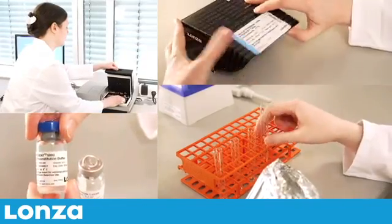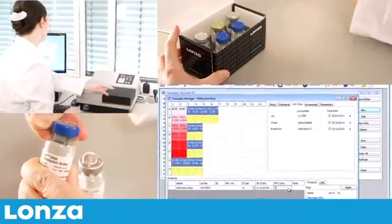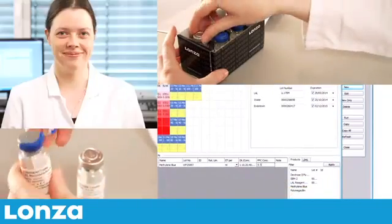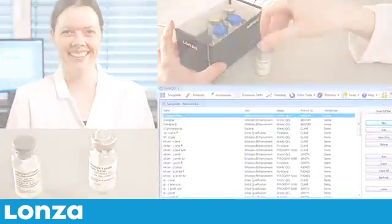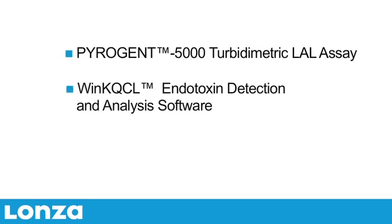To support these needs, we have developed an integrated system to optimize quantitative endotoxin detection. In this video, we are going to feature the three system components: Pyrogent 5000 Kinetic Turbidometric LAL assay, Win KQCL software, and an absorbance plate reader.